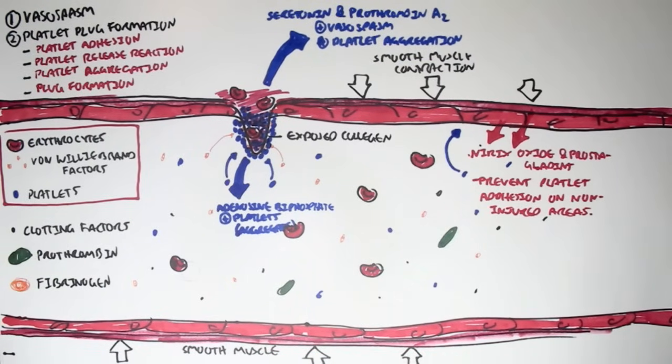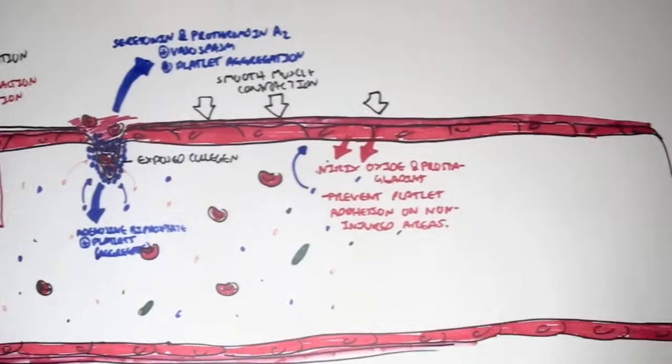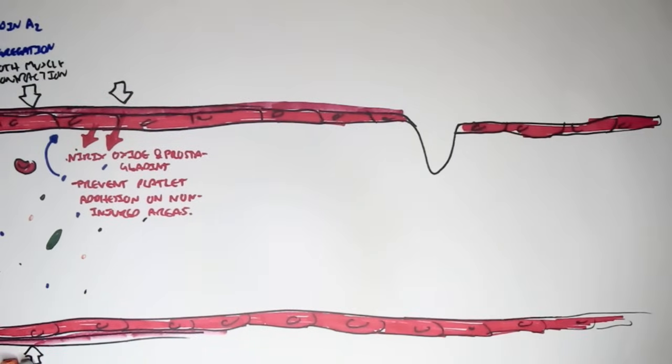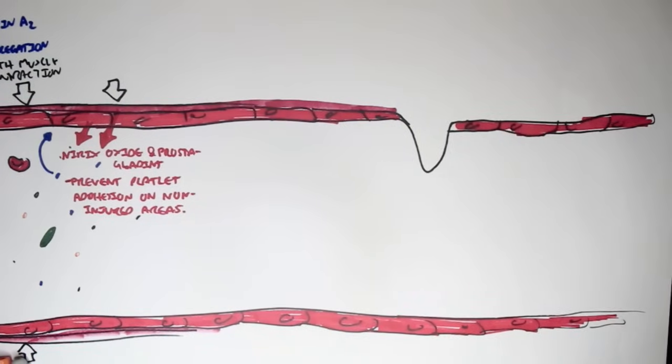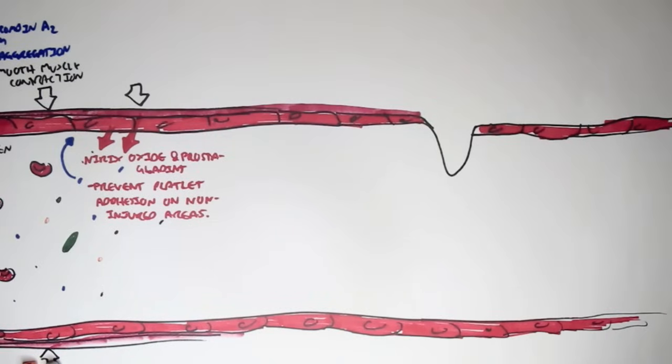Okay, so the platelets and thrombocytes created a temporary plug to stop the bleeding. However, this plug is not very strong, and so further processes are required to further strengthen this plug, such as clotting factors. And this is where our third step of hemostasis comes in, which is coagulation. And this involves the clotting factors to further strengthen the plug that was formed by the platelets. Let's have a look.